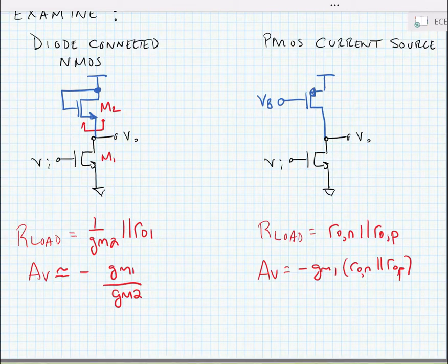Now, if I look at these two, it's fairly obvious that the PMOS load is going to give us the highest gain because our output resistance of a MOSFET is much higher than 1 over gm of a MOSFET. And we're going to derive the exact gain expressions in the next video.